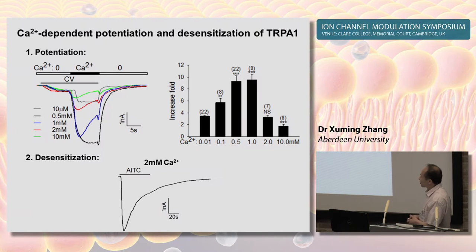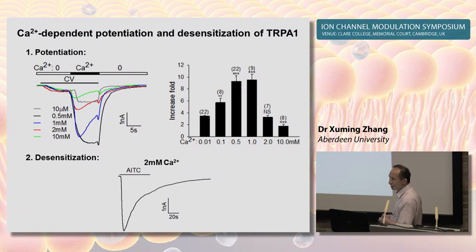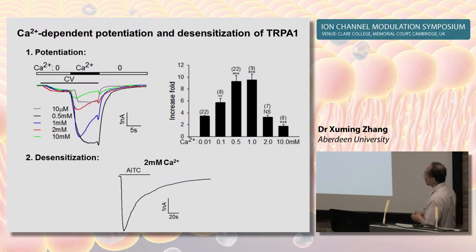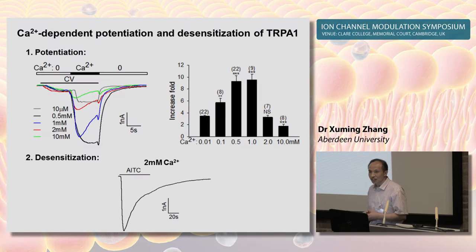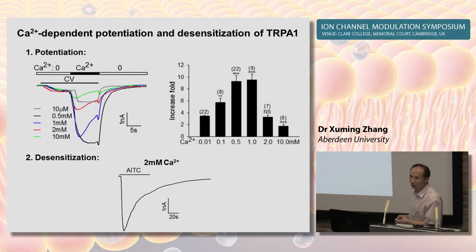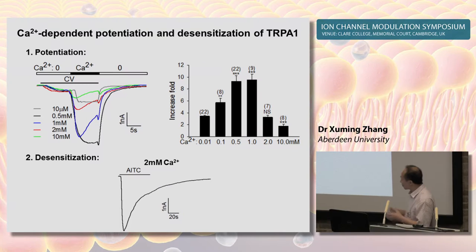To monitor desensitization more accurately, we used a saturating dose of AITC, an electrophilic TRPA1 agonist, to fully activate channels at 2 mM calcium. AITC rapidly desensitized channels. This experiment therefore demonstrates that calcium can both promote potentiation and desensitization of the channels, with low calcium promoting activation and high calcium promoting desensitization.